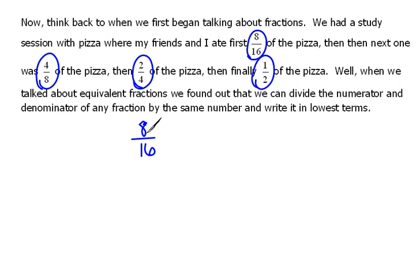Well, remember, in order to do that, we have to take and divide the numerator and the denominator by the exact same amount. So in this case, they have an 8 in common. So if we were to divide top and bottom by 8, 8 divided by 8 is 1, and 16 divided by 8 is 2. So we saw that that was one half, and we could have done that with any of those problems.